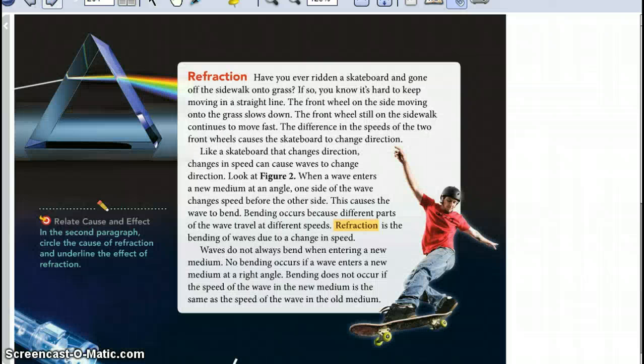Refraction. Have you ever ridden a skateboard and gone off the sidewalk into grass? If so, you know it's hard to keep moving in a straight line. The front wheel on the side moving into the grass slows down. The front wheel still on the sidewalk continues to move fast. The difference in the speeds of the two front wheels causes the skateboard to change direction.